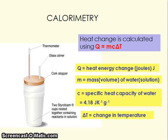When we do calorimetry experiments — calorimetry is just experiments involving heat changes — this diagram shows a typical simple calorimeter that you might use in a sixth form lab. You have two polystyrene cups containing the reactants, a thermometer to measure the temperature change, a glass stirrer so you can stir the chemicals to mix them evenly and distribute the temperature evenly, and a cork stopper as a lid to help minimise heat loss.